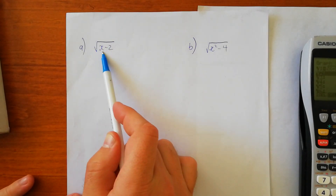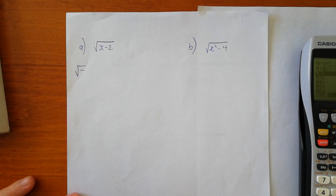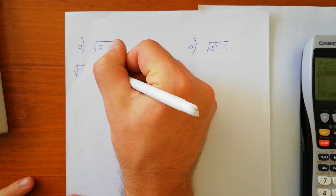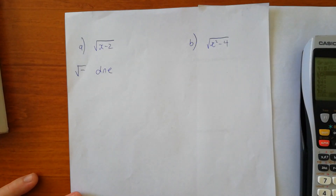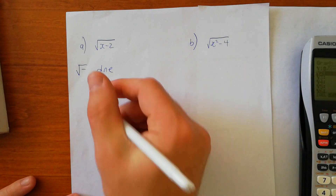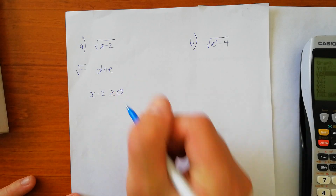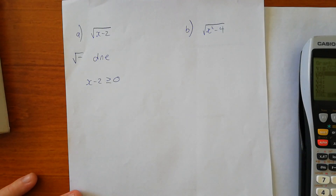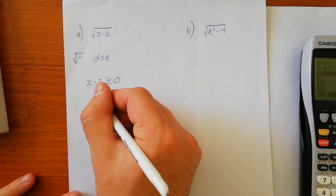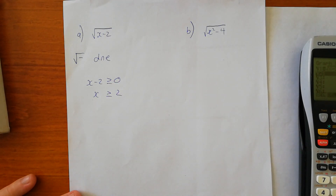We know that the square root of a negative number does not exist — 'DNE' means does not exist. So if we have the square root of x take 2, then x take 2 has to be greater than or equal to 0 for all values of x. What this means is that x has to be greater than or equal to 2, otherwise it's undefined.